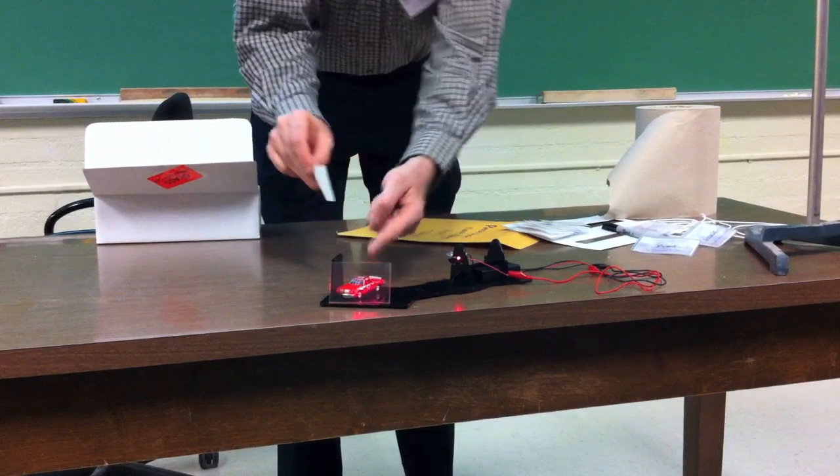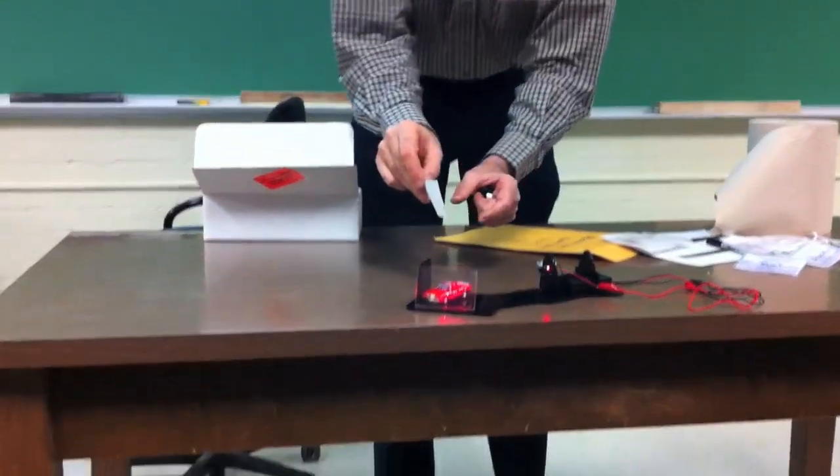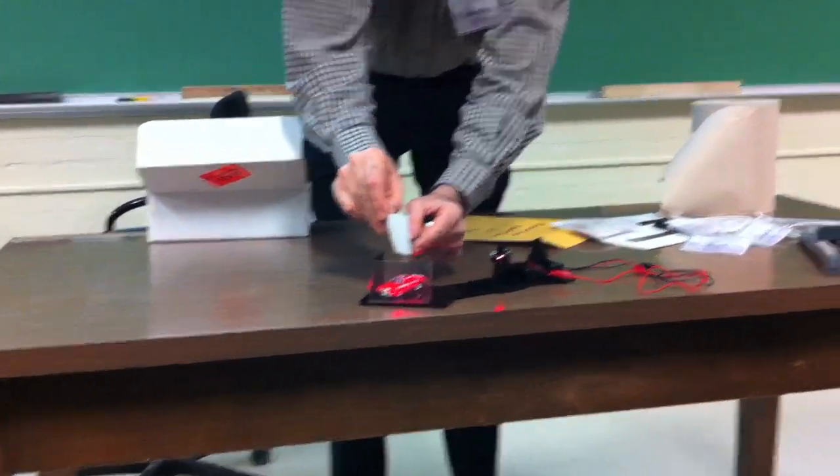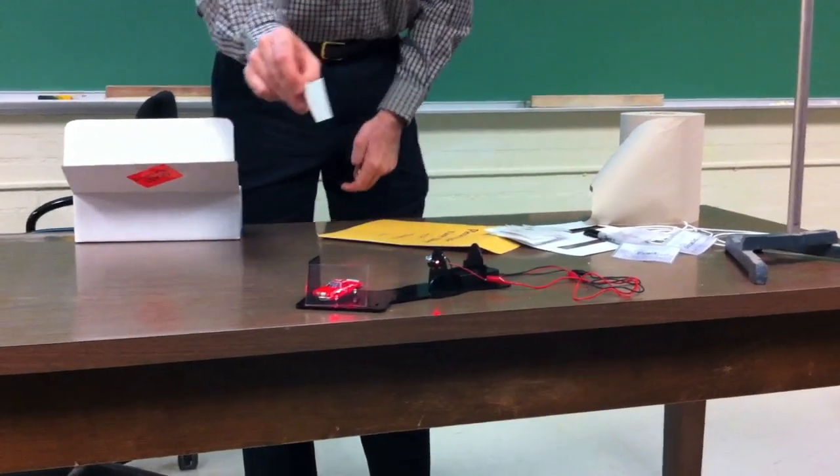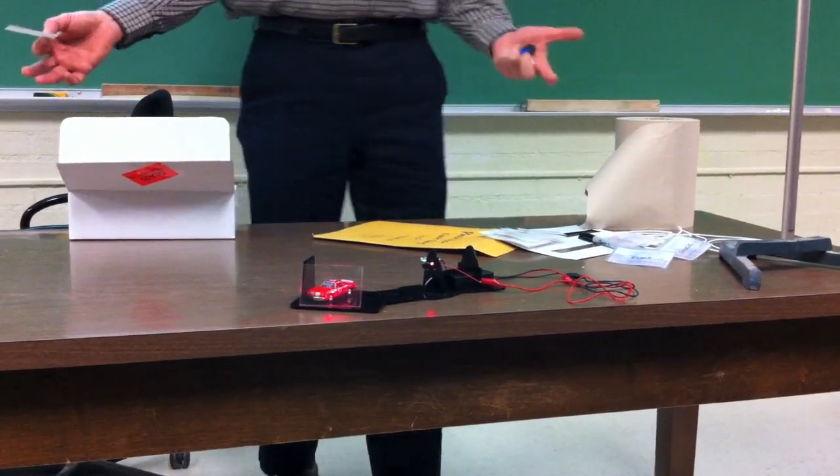So my reference beam that doesn't hit the object illuminates the glass. The other part of the beam hits the object and reflects into the glass, causing the interference. And it's dead simple.